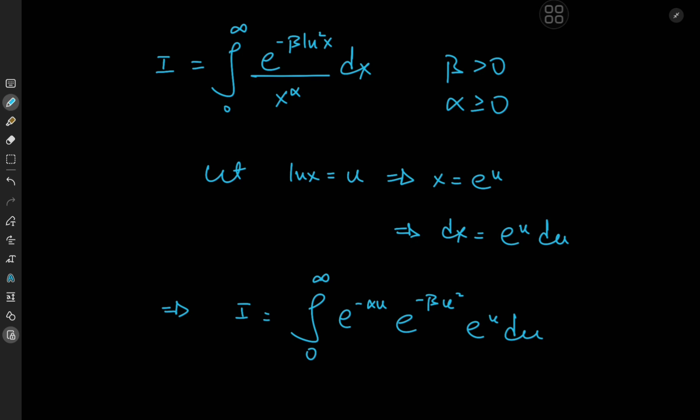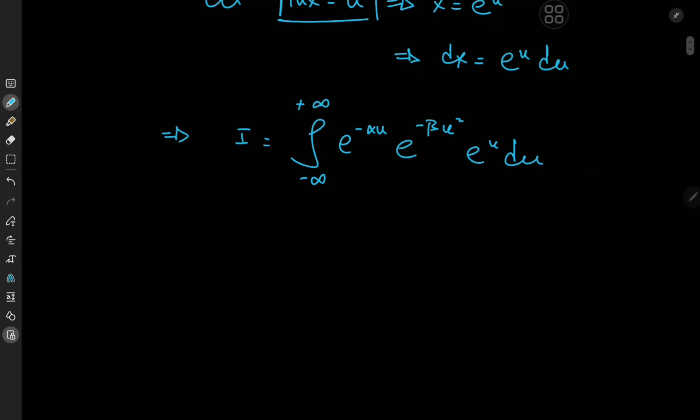And one thing my tired ass forgot was as x approaches 0, u is supposed to approach negative infinity. So we have the integral from negative to positive infinity of all of this stuff that we could tidy up a bit. So we'll write this as the integral from negative to positive infinity of e to factoring out the negative sign. We have beta u squared plus alpha u minus u du.